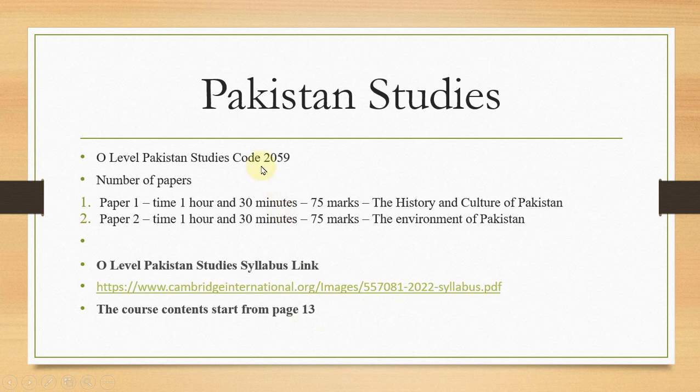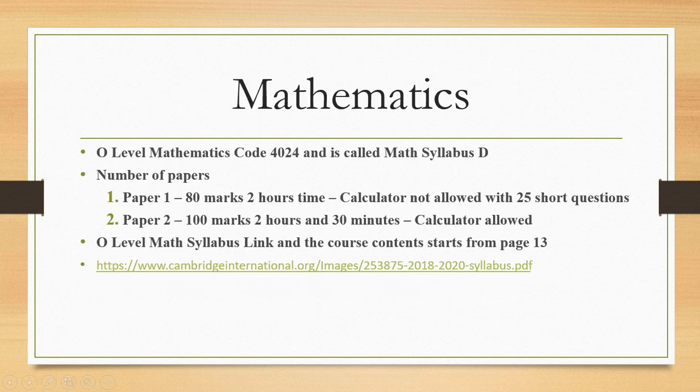Pakistan Studies code is 2059. Two papers, time for Paper 1 is one hour 30 minutes, Paper 2 also one hour 30 minutes, marks are the same. Paper 1 is History and Culture of Pakistan, Paper 2 is Environment of Pakistan. This is the link and page 13 gives you the contents.